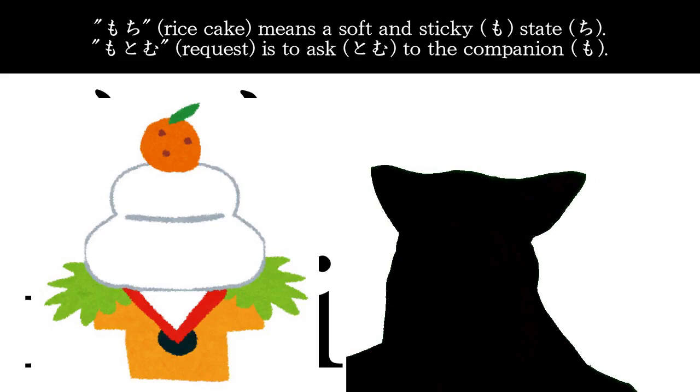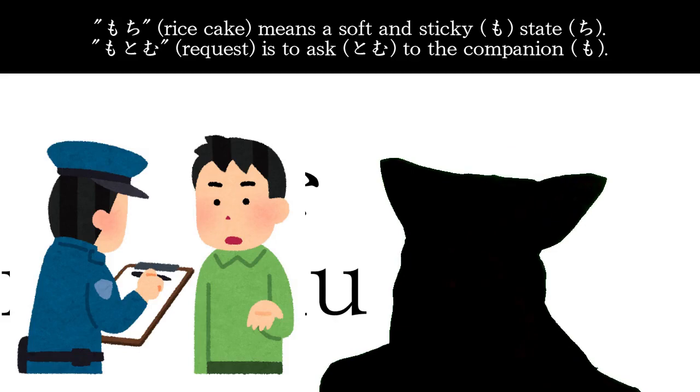Mochi, which is a rice cake, means a soft and sticky state. Motomu, which is a request, is to ask to the companion.